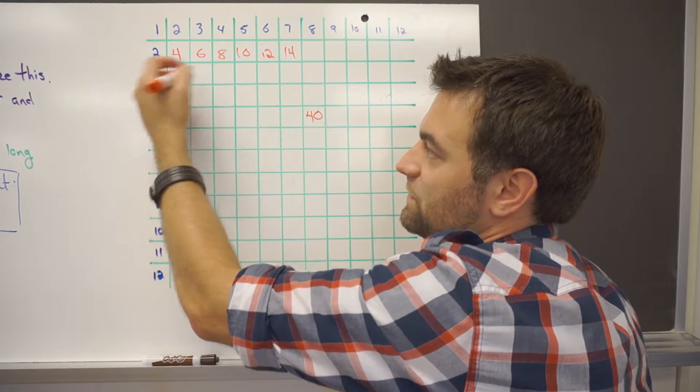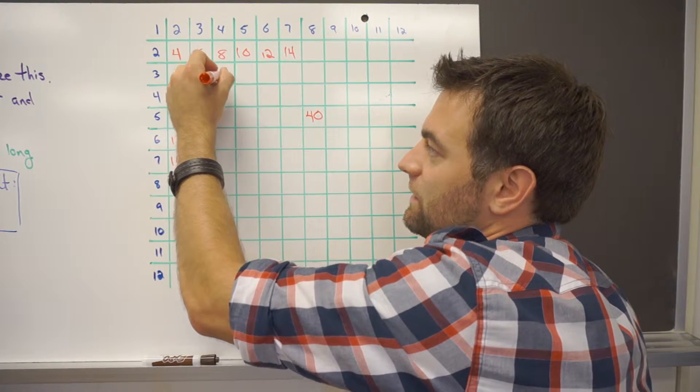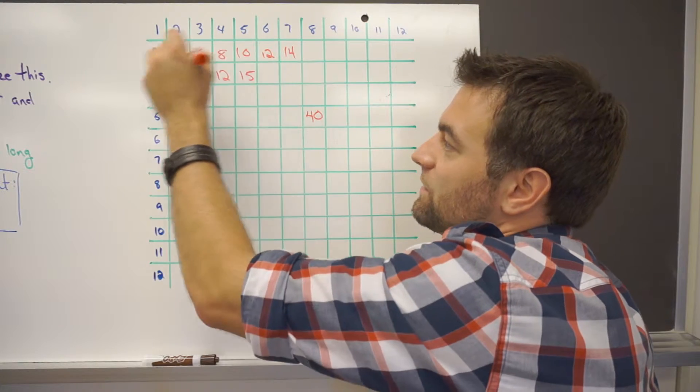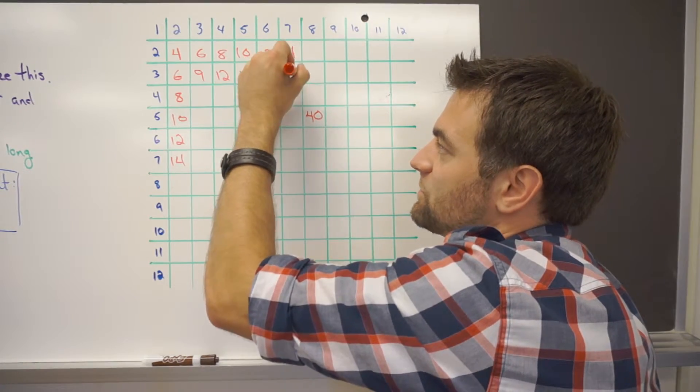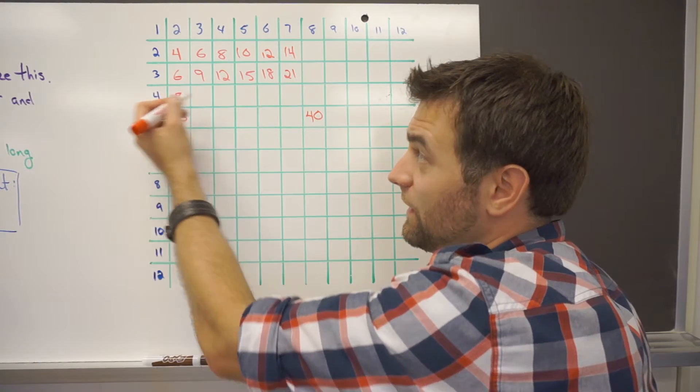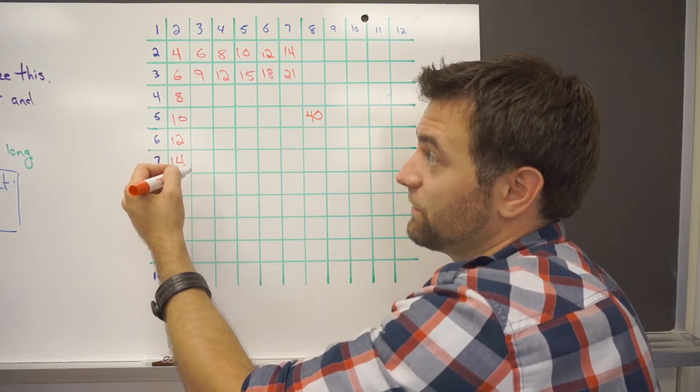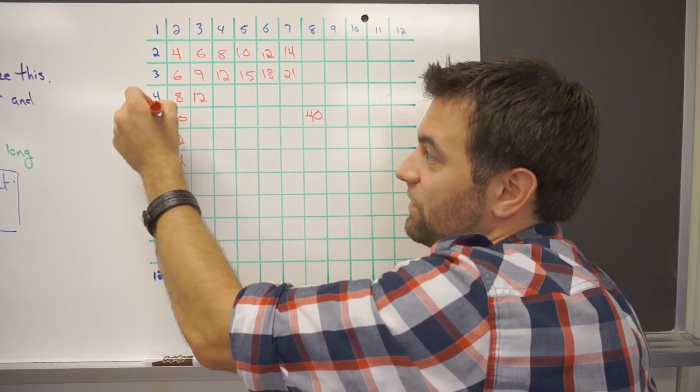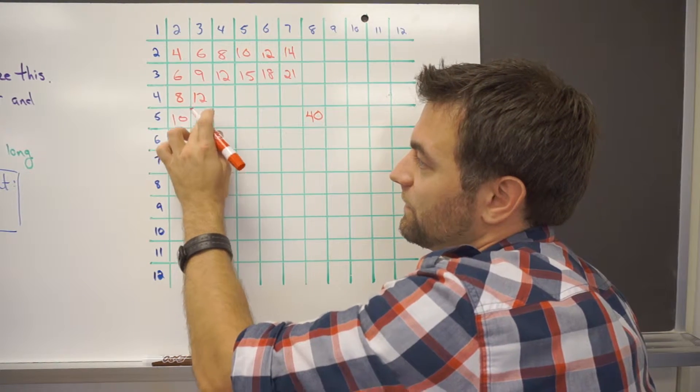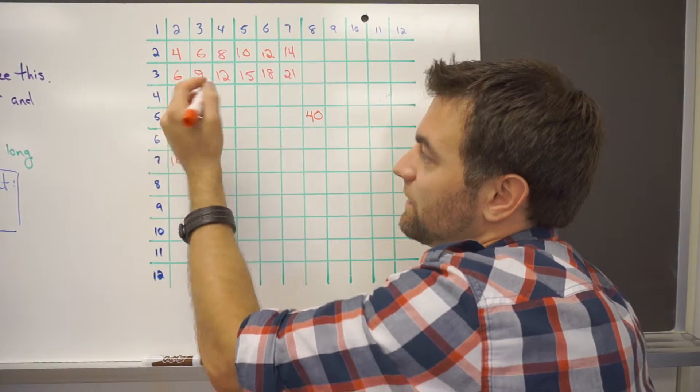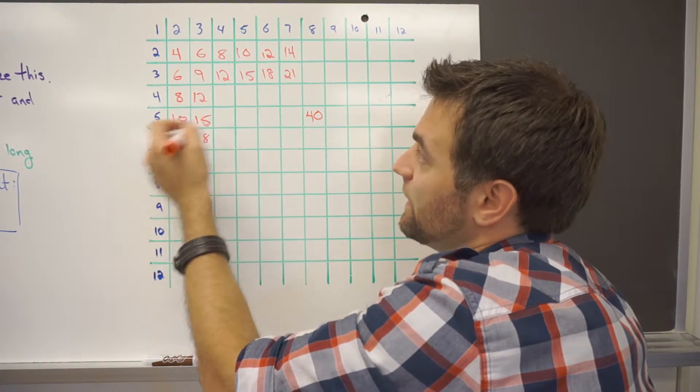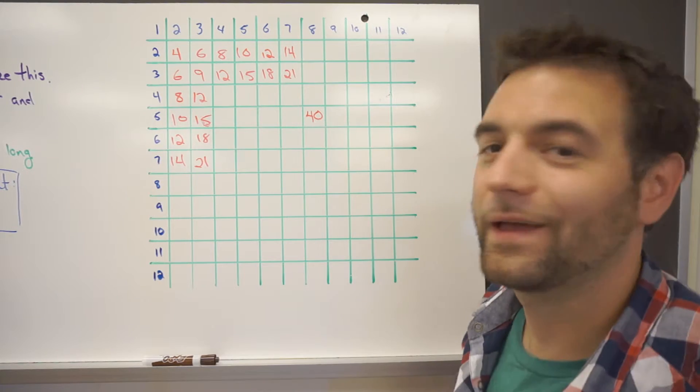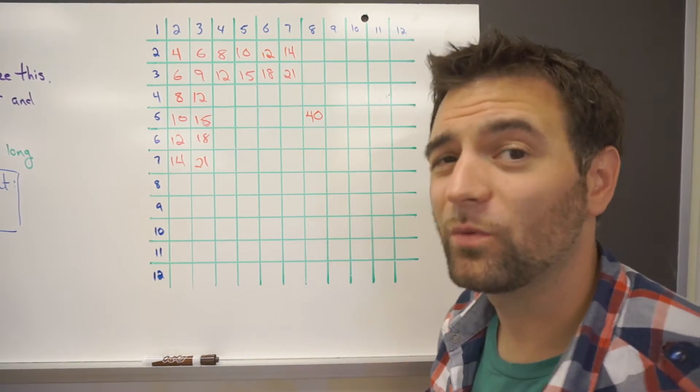And when we start with a 3, 3 times 3 is 9. And 3 times 4 is 12. 3 times 5 is 15. 3 times 6 is 18. And 3 times 7 is 21. And if we continue on going down this way, 3 times 4, notice there's the 12. 3 times 5 again. Sorry, that should be a 15. 3 times 8, 3 times 6, and 3 times 7.